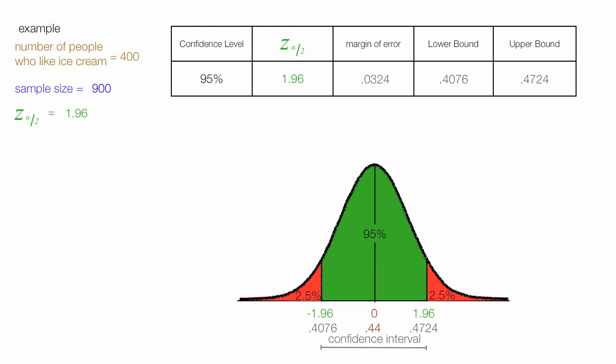So what does all this mean? Did all these calculations. It means you are 95% confident the population proportion is between 0.4076 and 0.472. In other words, you are 95% confident that between 41% and 47% of people like ice cream.